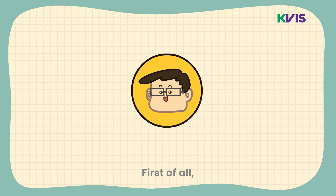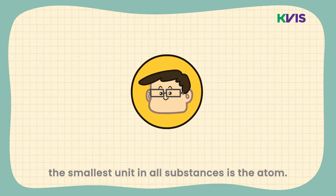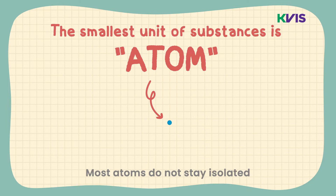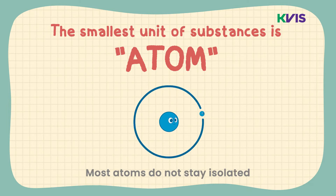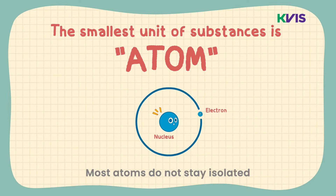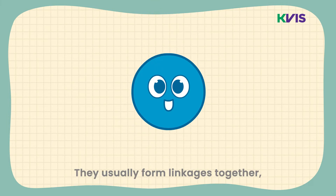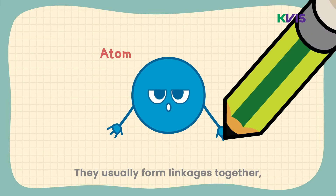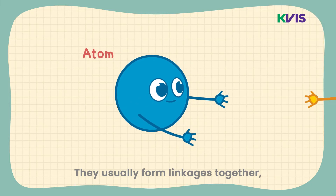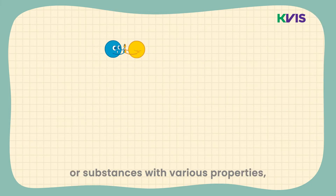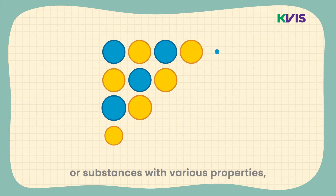First of all, we know already that the smallest unit in all substances is the atom. Most atoms do not stay isolated as a single unit. They usually form linkages together, giving bigger molecules or substances with various properties.